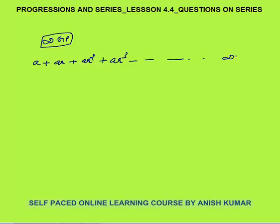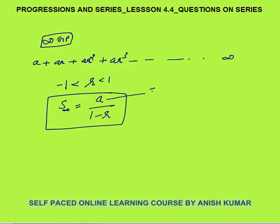Hello, this is Progression and Series, Lesson 4.4. In this lesson I will discuss infinite series based questions. The infinite series is: a + ar + ar² + ar³... up to infinite terms. The condition is that r must be between -1 and 1. The sum of infinite terms equals a upon (1 - r), where a is the first term and r is the common ratio.